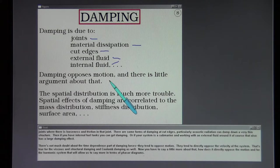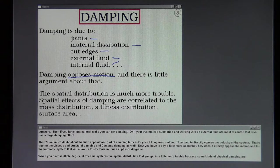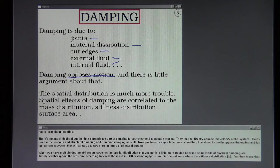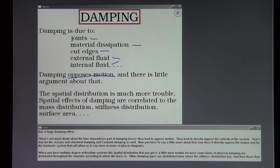There's not much doubt about the time dependence part of damping forces. They tend to oppose motion. They tend to directly oppose the velocity of the system. That's true for the viscous and structural damping and Coulomb damping as well. Now you have to say a little more about that. How does it directly oppose the motion? And for the harmonic system that will allow us to say more in terms of phasor diagrams.